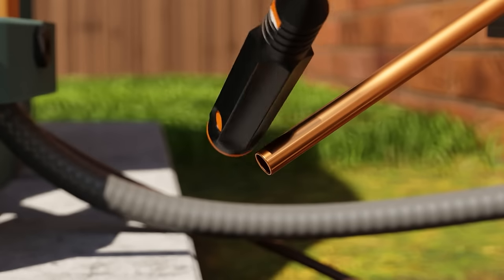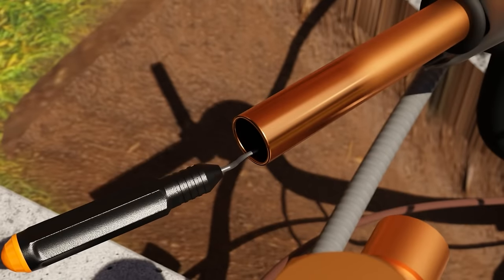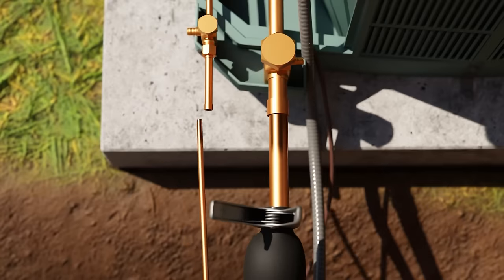Here we show tipping the copper downward and tapping it with the back of the deburring tool to ensure that no shavings fall into the tube. Also make sure not to over-deburr in cases where you're going to make a flare connection. This can thin out the edge and cause cracking.